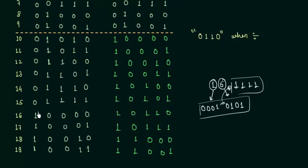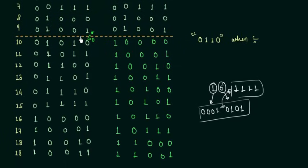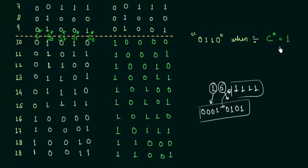Looking at the table, we have columns for output carry C*, and binary sum bits S0*, S1*, S2*, S3*. We can see that whenever C* is 1 — which covers the cases from 10 to 19 — we need to add 6 to convert the binary sum to BCD. So our first case is: when C* equals 1, add 6.